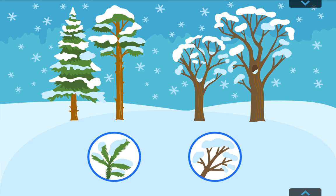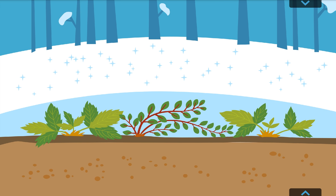Conifer. Deciduous tree. Most plants don't grow in the winter, but some plants, like strawberries, cranberries, and wheat, can live under snow in the winter and even grow a little. For these plants, snow is like a blanket that covers them and stops them from freezing. Under the snow, these plants are quite warm and comfortable.